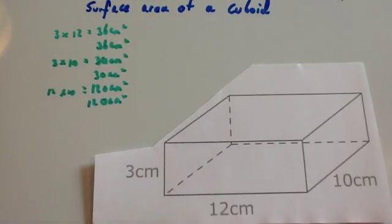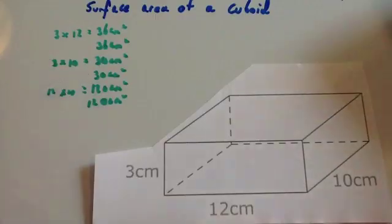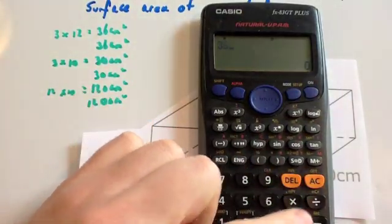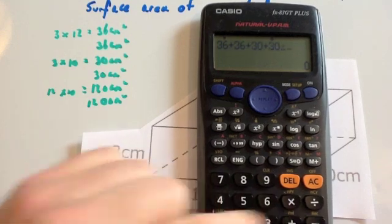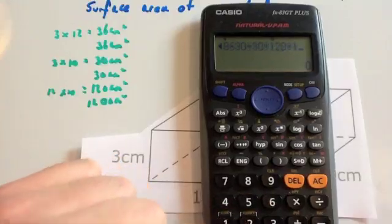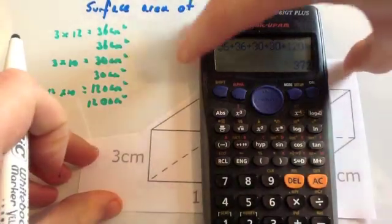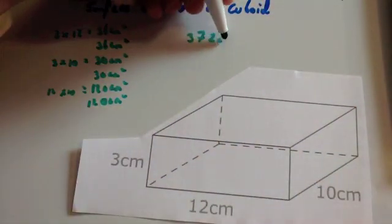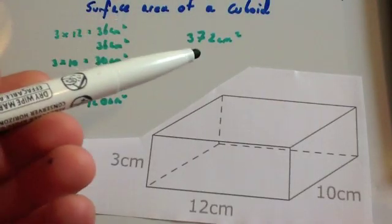Finally, you've got to add them all up. If you add up all those areas you get the total surface area, because you've got all six faces. So we do 36 plus 36 plus 30 plus 30 plus 120 plus 120, and the total surface area of this cuboid is 372 centimetres squared. Notice the units — because it's surface area, it's centimetres squared.